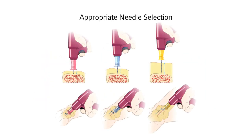Appropriate needle selection is evidenced by the black 5 mm mark visible above the skin when the tip of the needle set is touching the bone prior to drilling.